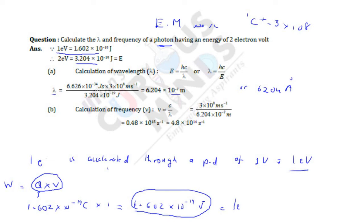Now if you need the frequency, frequency equals c upon lambda. With lambda known, we get the value of frequency as 4.8 into 10 raised to 14 second inverse. So that's the solution.